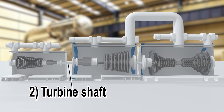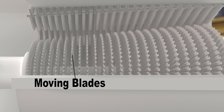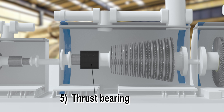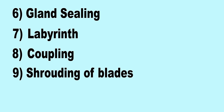2. Turbine Shaft. 3. Blades — Fixed Blades and Moving Blades. 4. Journal Bearing. 5. Thrust Bearing. 6. Gland Sealing. 7. Labyrinth. 8. Coupling. 9. Shrouding of Blades.